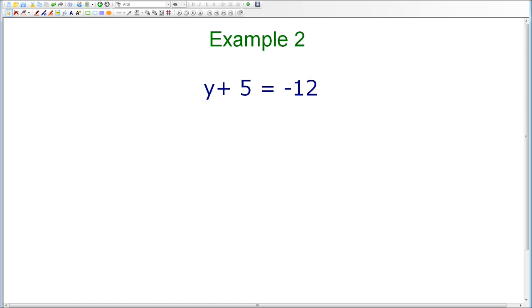To start the process of solving this equation, I'm going to start by rewriting this equation, y plus 5 equals negative 12. But as I do, I'm going to leave an open space next to the 5, because that's the number that I need to get rid of in order to get y by itself.